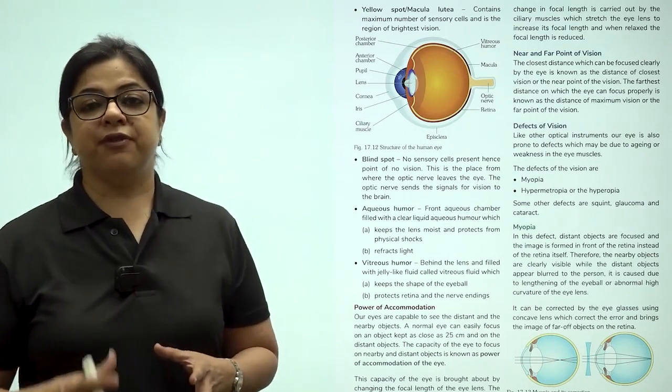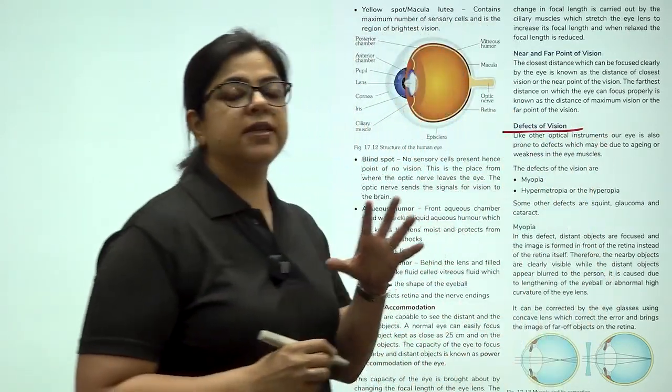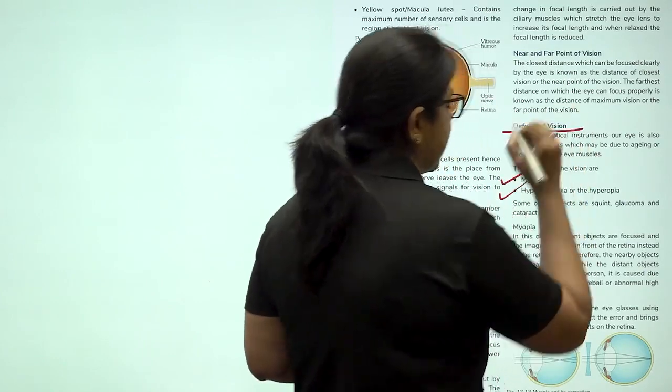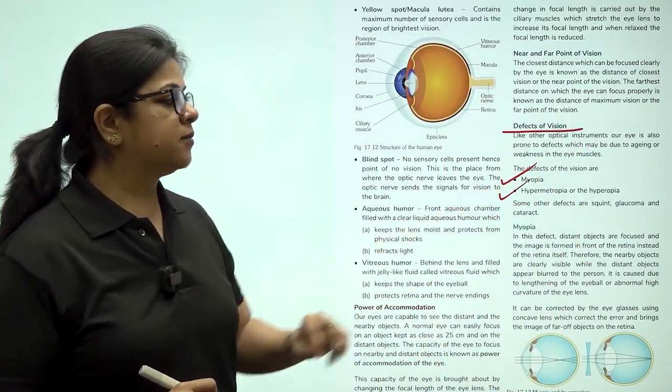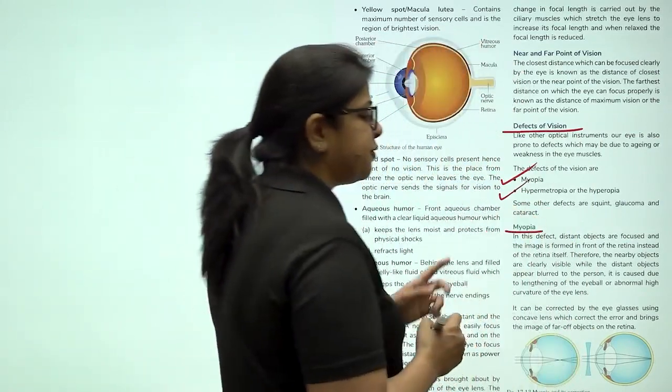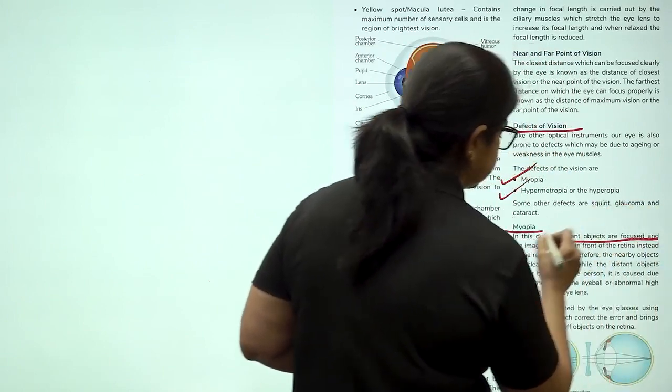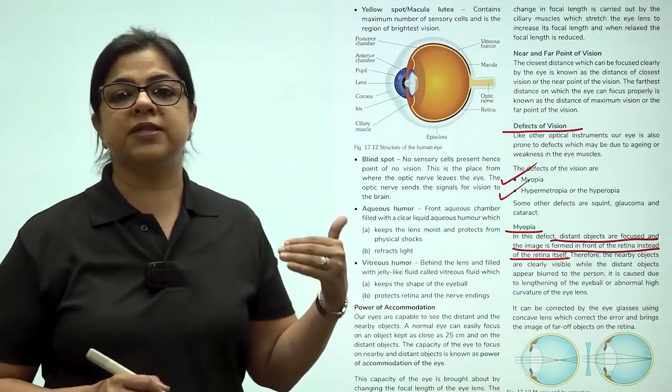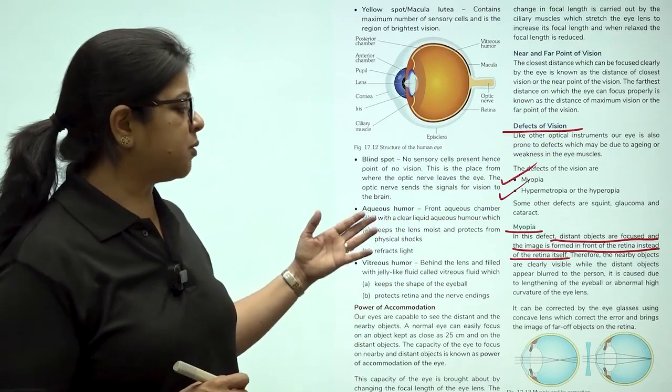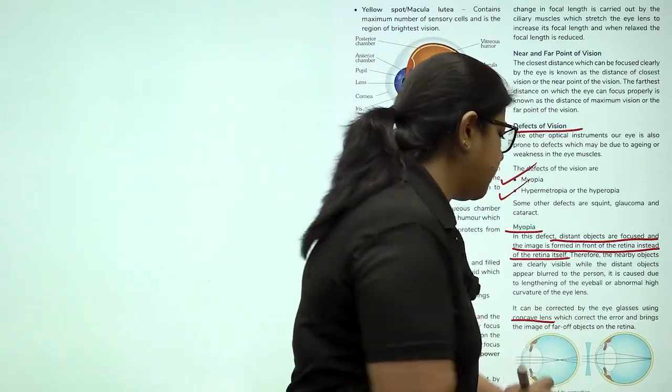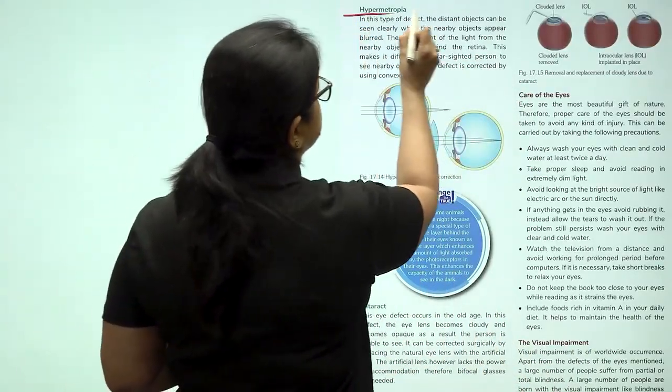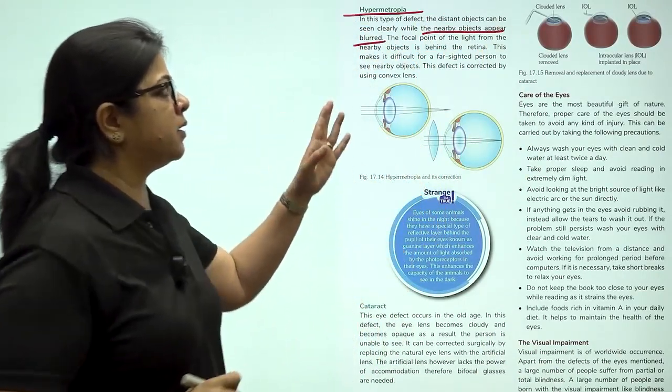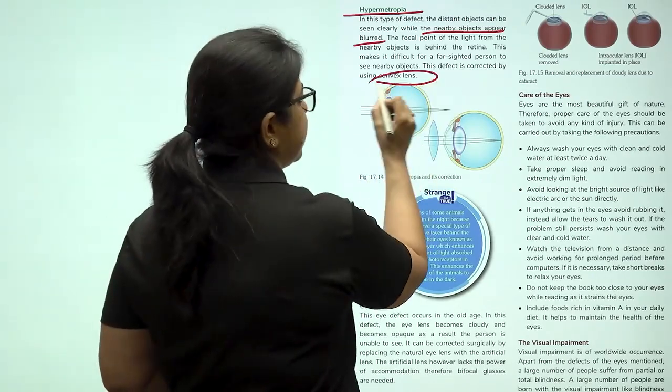Sometimes our eyes face defects. These defects cause the images in front of us to blur. There are two types of defects: myopia and hypermetropia or hyperopia. In myopia, the distant objects are focused and the image is formed in front of the retina instead of the retina itself. Thereby the nearer objects are visible but the farther objects are not visible. This is myopia and it is corrected by wearing a concave lens. Hypermetropia is when the distant objects are seen clearly but the nearby objects appear blurred. This can be corrected by using a convex lens.